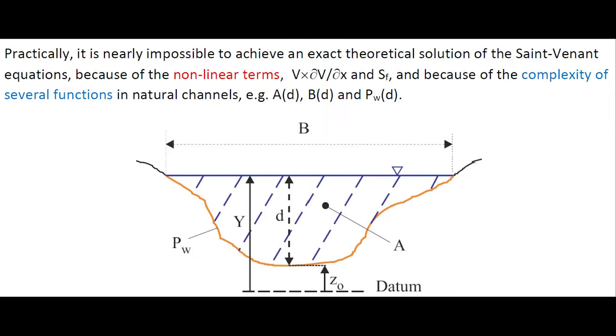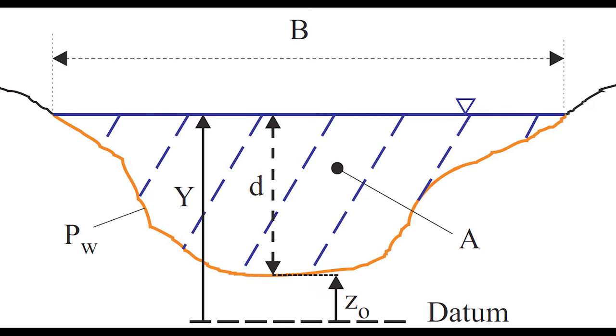Practically, it is nearly impossible to achieve an exact theoretical solution of the Saint-Venant equations, because of the non-linear terms, and because of the complexity of several functions in natural channels such as cross-sectional area, free surface width, and wetted perimeter.